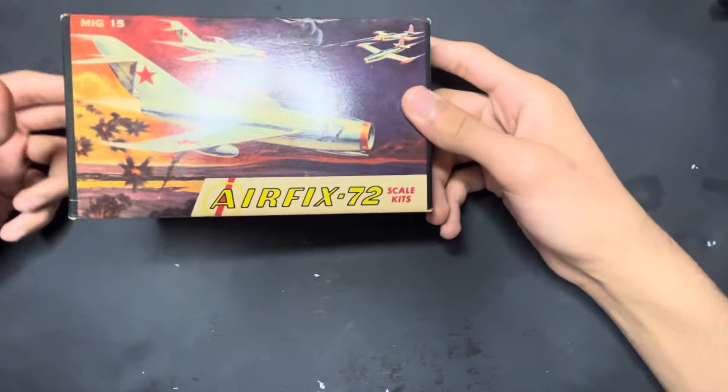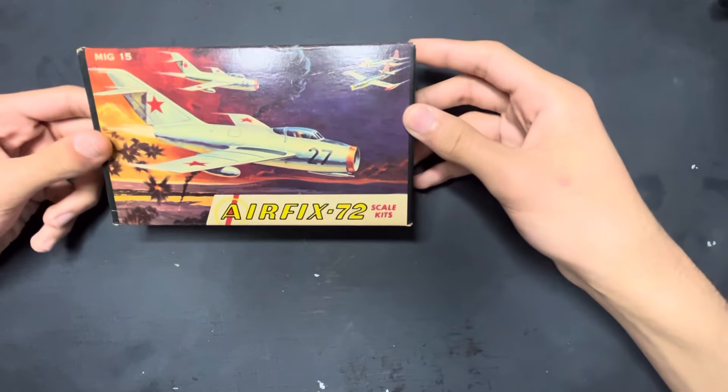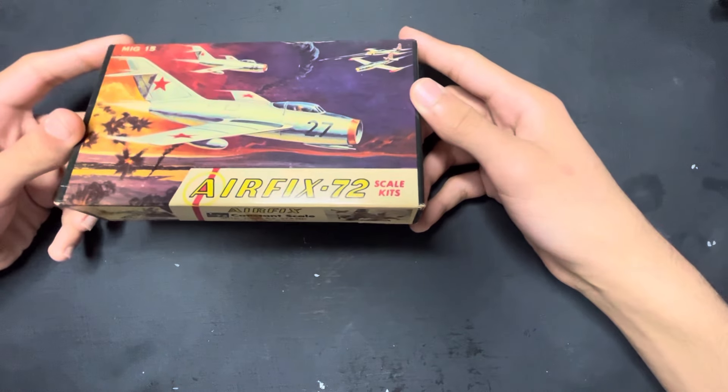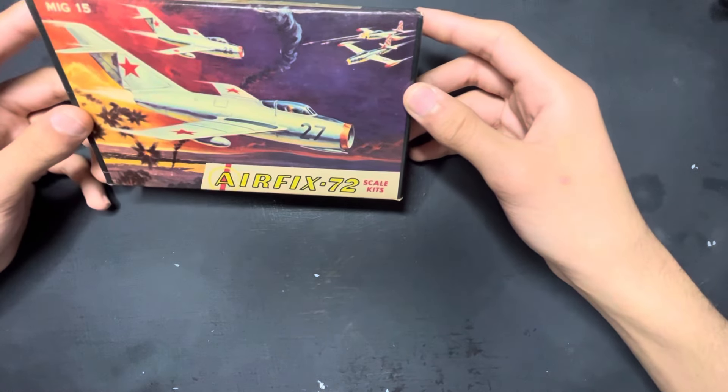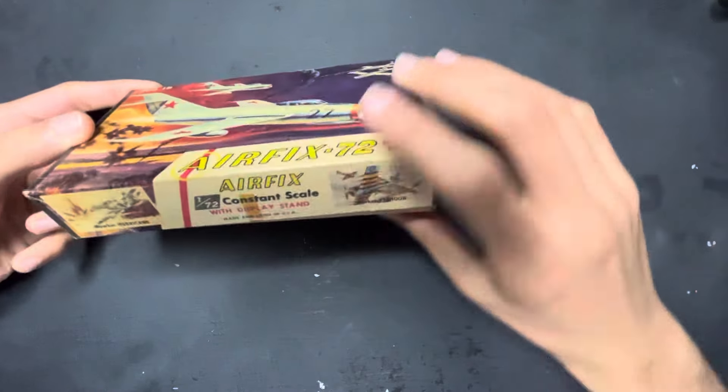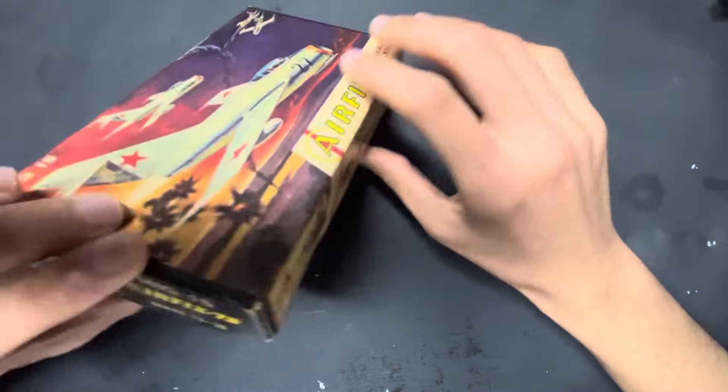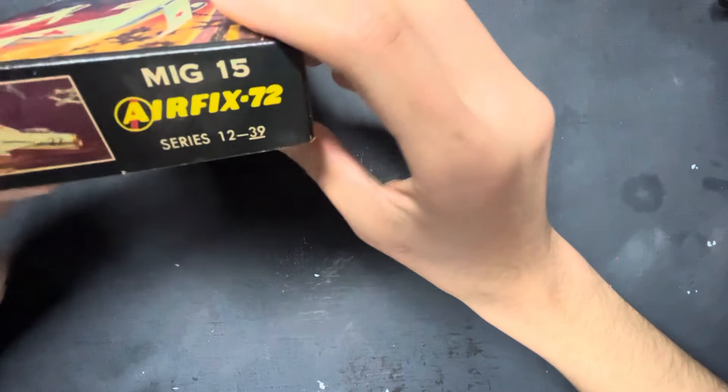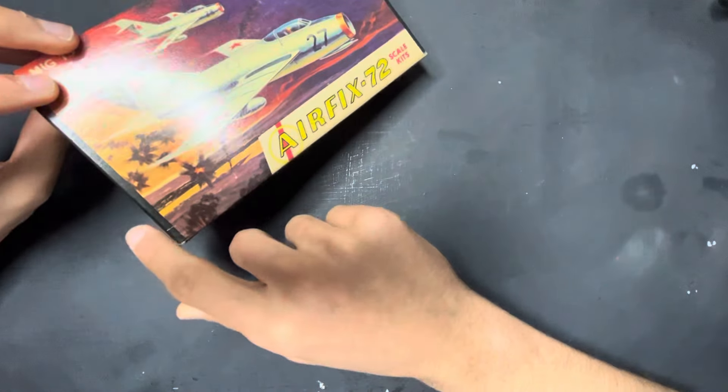What I have yet to unbox is this very old Airfix MiG-15 in 1/72nd scale. Now, God knows when this kit was released. This is Series 1239 on the side, on the left side of it.